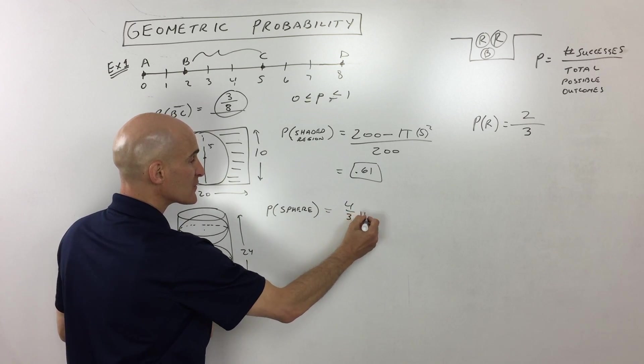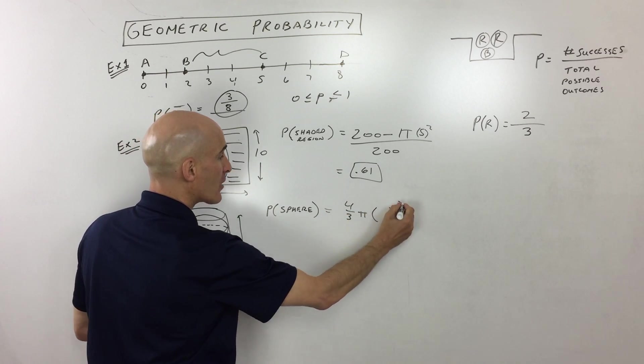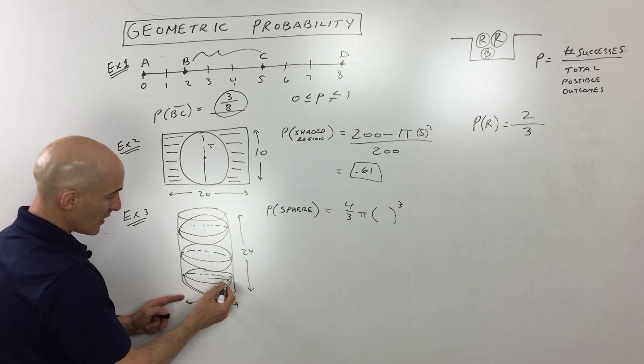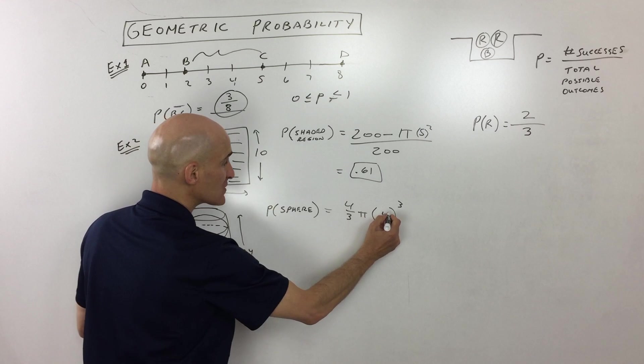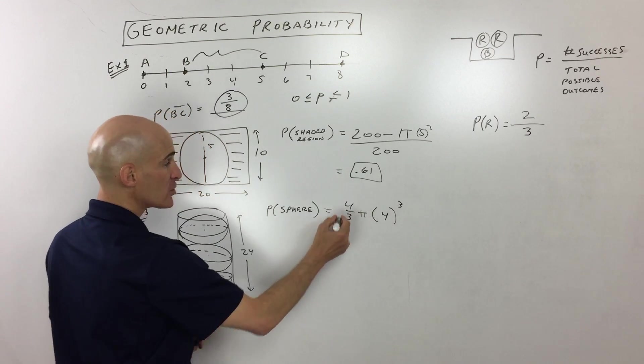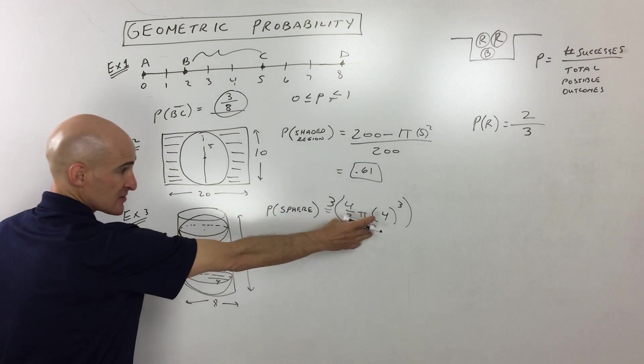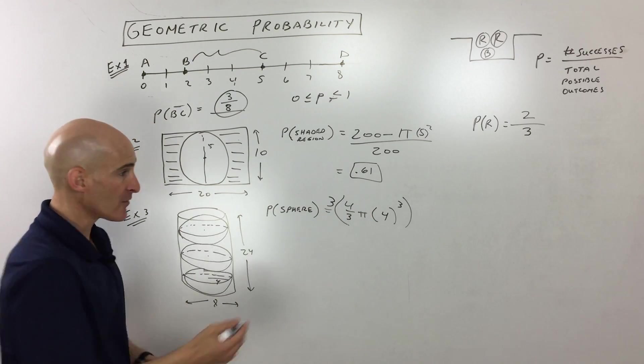The formula for volume of a sphere is four thirds pi r cubed. The diameter is eight. So that means that the radius of one of these spheres is four. So this is four thirds pi times four cubed. But remember, we have three of them. Three spheres. So that represents the volume of success.